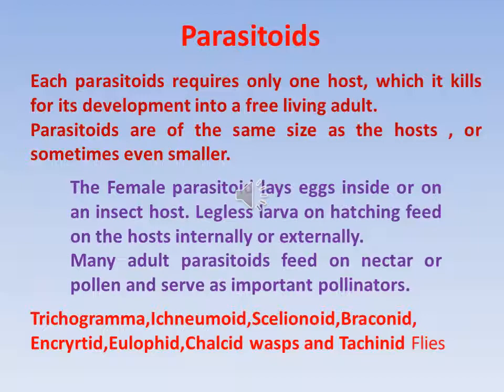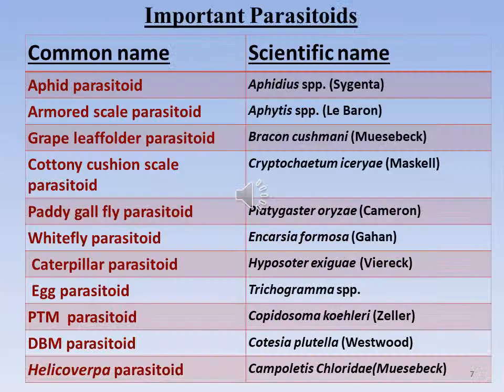Some important parasitoids include: Aphid parasitoids — Aphidius species; Armored scale parasitoid — Aphytis; Grape leaf folder parasitoid — Bracon; Cottony cushion scale parasitoid — Cryptolaemus; Paddy gallfly parasitoid — Platygaster oryzae; Whitefly parasitoid — Encarsia; Caterpillar parasitoid — Hyposoter; Egg parasitoid — Trichogramma; PTM parasitoid — Copidosoma; DBM parasitoid — Cotesia; Helicoverpa parasitoid — Campoletis. These are all naturally occurring parasitoids.